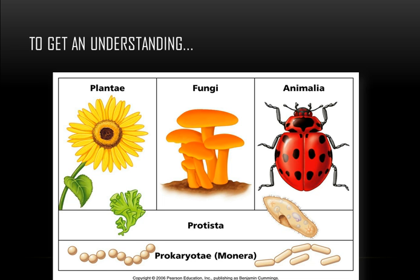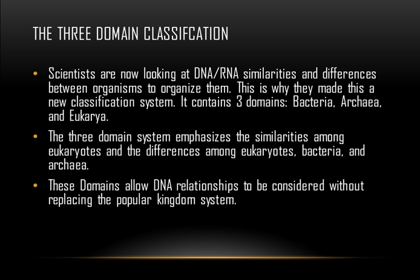Here's the chart of the five-kingdom classification. Now let's move on to the three-domain classification. As time went on, we later discovered that studies of DNA have changed a lot in biology. Scientists are now looking at DNA and RNA similarities and differences between organisms to organize them. This led to the new classification system containing the three domains: Bacteria, Archaea, and Eukarya. The three-domain system emphasizes the similarities among eukaryotes and the differences among eukaryotes, bacteria, and archaea.